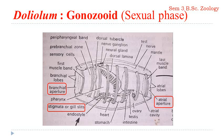Doliolum is a pelagic organism and the gonozoid is also a pelagic one. It moves by jet propulsion — it takes water through the branchial aperture, which reaches the pharyngeal region, passes through the gill slits into the atrial cavity, and then with the help of the muscles, the water is propelled out in a jet through the atrial aperture. The animal moves in the opposite direction of the water, so it moves by jet propulsion.